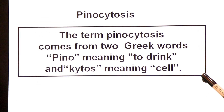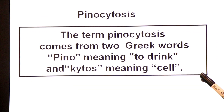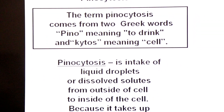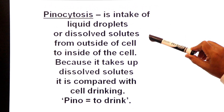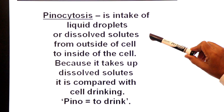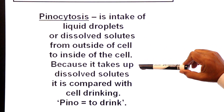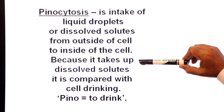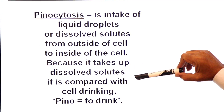The second type of endocytosis is pinocytosis. The term pinocytosis comes from two Greek words: pino meaning to drink, and kytos meaning cell — so it means cell drinking. The definition of pinocytosis is the intake of liquid droplets or dissolved solutes from outside of the cell to inside the cell. It is compared with cell drinking because it takes up dissolved solutes.